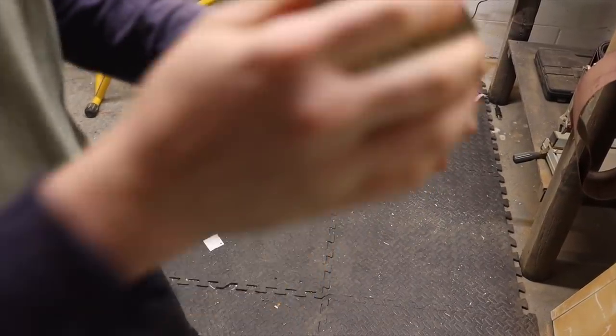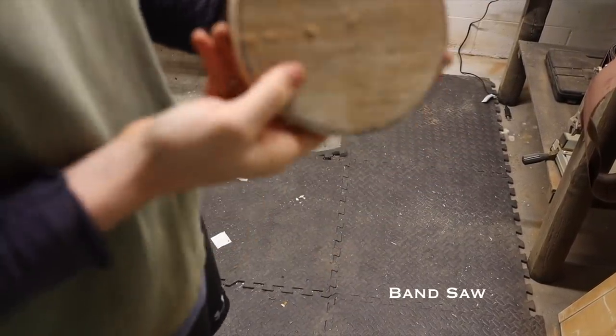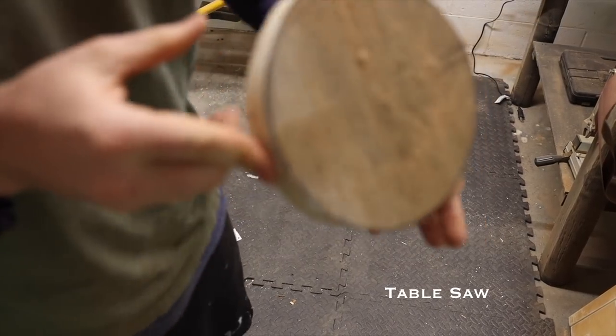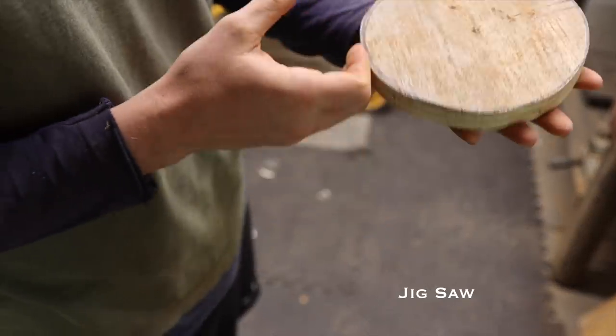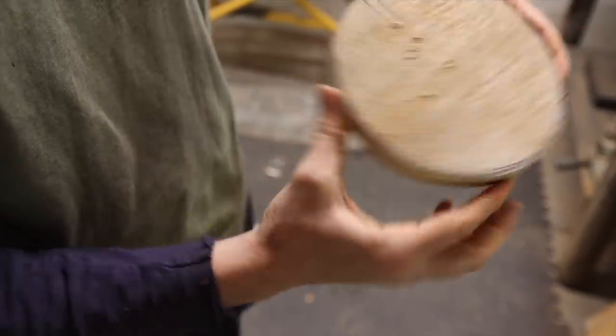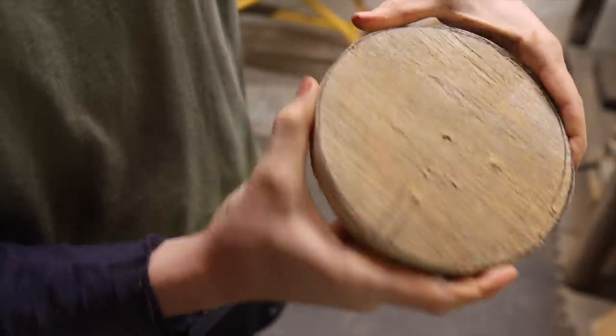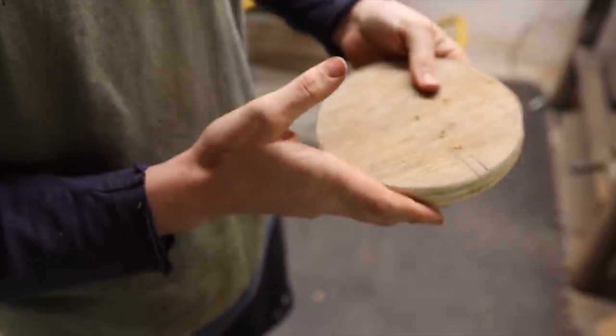There's the rough cut out. If you don't have a bandsaw, there's many ways to cut this out. You can actually use a table saw with a jig, or you can use a router, a coping saw, or a jigsaw. There's plenty of different ways to cut out a circle. You can just search those on YouTube and a lot of different woodworkers will show you how to do so.